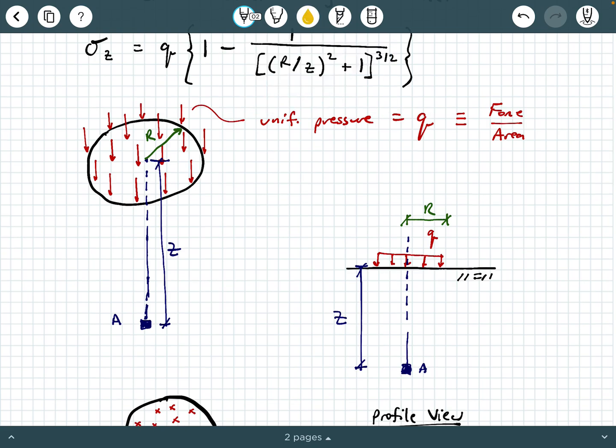So you're able to calculate the stress at a point other than the point beneath the center. So for example, if we wanted like the stress underneath a point that's some radial distance little r away from the center, that's what we're referring to when we use this table 8.4 from Das and Sivakugan.